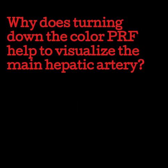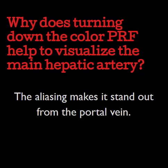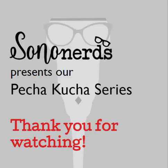Why does turning down the color PRF help to visualize the main hepatic artery? The aliasing makes it stand out from the portal vein. The main hepatic artery runs parallel with the portal vein — they are both hepatopetal vessels. If you turn down your PRF, you will induce aliasing within the main hepatic artery, helping to visualize its course along the portal vein. Thank you so much for watching this Pecha Kucha on abdominal ultrasound, hepatic Doppler. Come back for more quick videos and educational content.